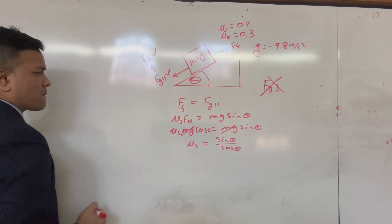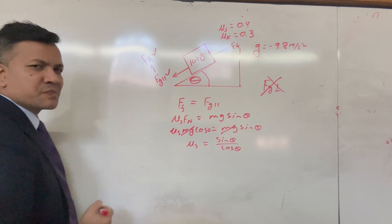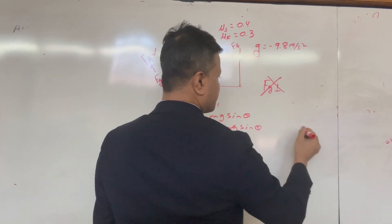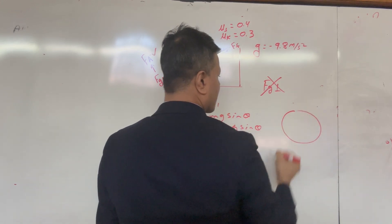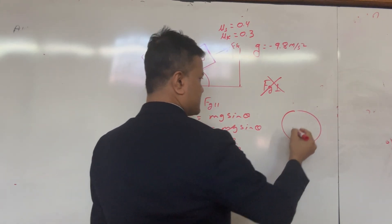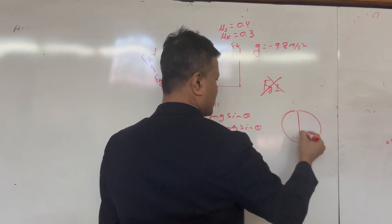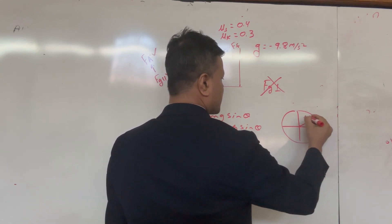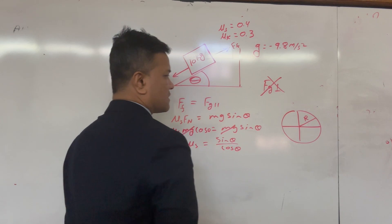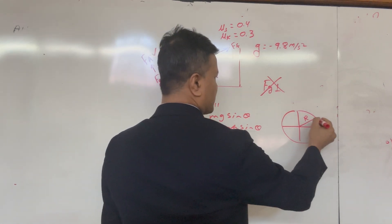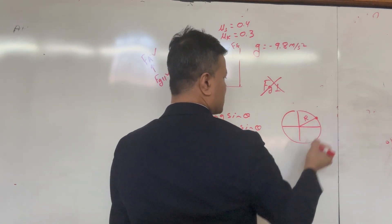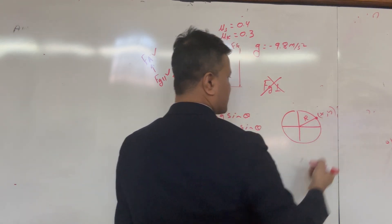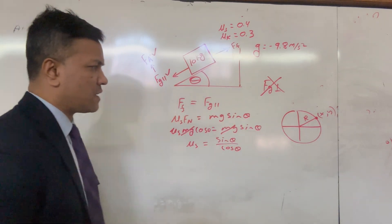Now let's prove something using the unit circle. We cut the unit circle into four quadrants, with radius r. In two dimensions, a point is defined as (x, y), and we're going to prove that x = cos(θ) and y = sin(θ).